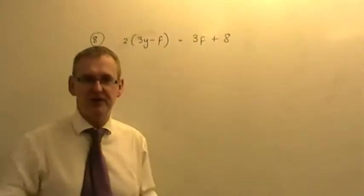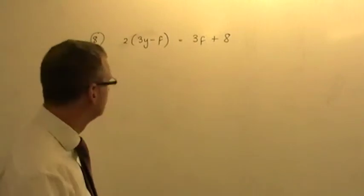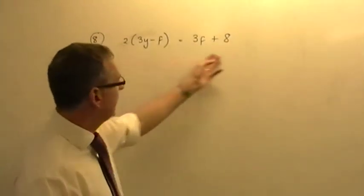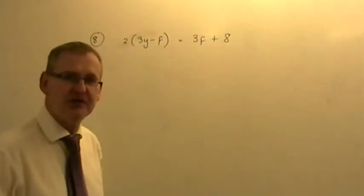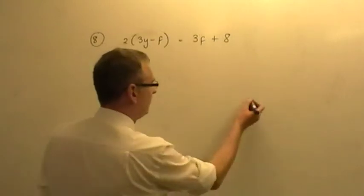OK, let's finish off questions 8 and question 9 in this short video, just to finish off the practice test. We've got this expression here, this formula that is given. At the moment it doesn't have a subject, which means it doesn't have a letter on its own.